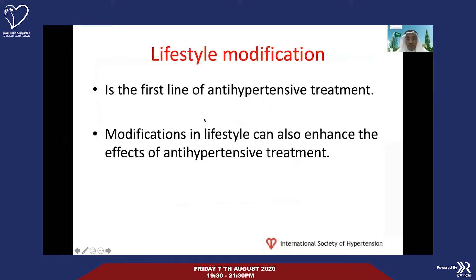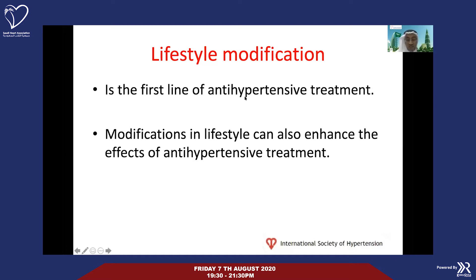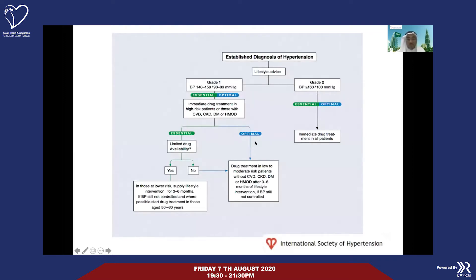The management is consistent across guidelines. Always go with lifestyle modification — lifestyle, lifestyle, lifestyle — across all degrees of hypertension, whether stage one or stage two, complicated or non-complicated, with or without end-organ damage. That should be your first step. In certain situations you might start antihypertensives immediately depending on risk factors, or you might delay and see the response to lifestyle modification first.